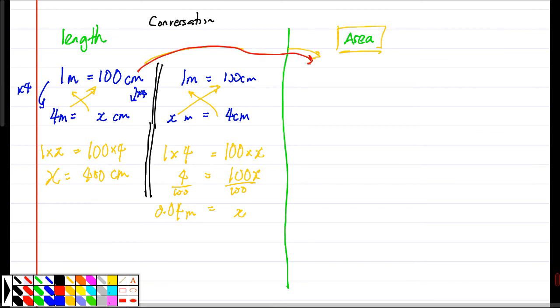One common mistake is you will think that 1 meter squared equals 100 cm squared. Now this is wrong, so I put a big wrong here.